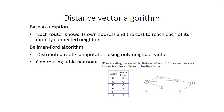Today we are going to discuss the practical program in part 2 of the CCN lab, where you will be studying the distance vector algorithm and executing a program using it. The basic assumption is that every router knows its own address and the cost to reach each of its directly connected neighbors. It is going to use the Bellman-Ford algorithm.